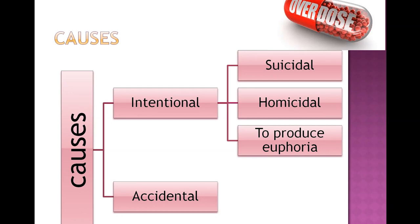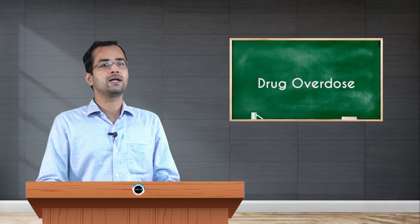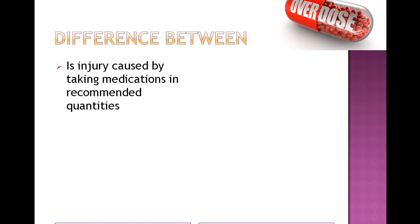Accidental ingestion may be self-induced, or occasionally it can be iatrogenic — meaning doctor-induced. If a patient is on multiple medicines for complicated conditions, there can be miscalculation by the doctor leading to accidental ingestion of extra doses. To summarize, causes of overdose can be intentional — suicidal, homicidal, or to induce euphoria — or accidental, whether self-induced or iatrogenic.